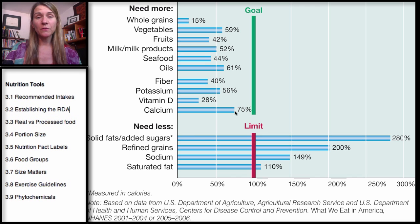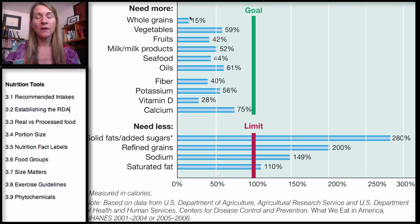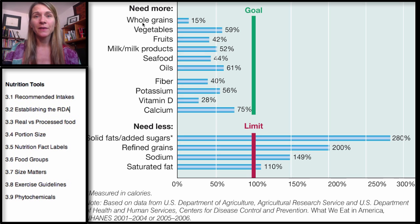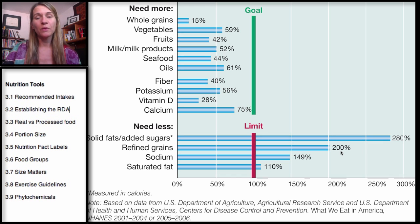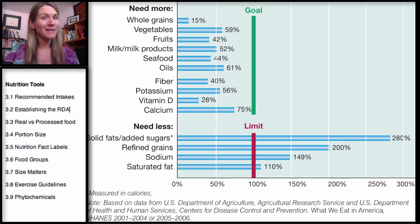What they found by analyzing all the data is that Americans need more whole grains. The goal is way out here at 15%. Some people don't eat a lot of grains, and that's okay. But the problem is not the whole grains — it's replacing whole grains with refined grains. Look at this: refined grains are at 200% of what would be the limit. You don't need to eat any refined grains. It's easy and convenient and they might taste good, but there's no health reason. All these refined grains really should be replaced with whole grains.